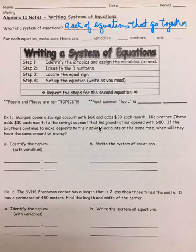We are writing systems of equations, and we start off, what is a system of equations? It's a set of equations that go together, and for each equation, we need to make sure that there are two variables, three numbers, and one equal sign.